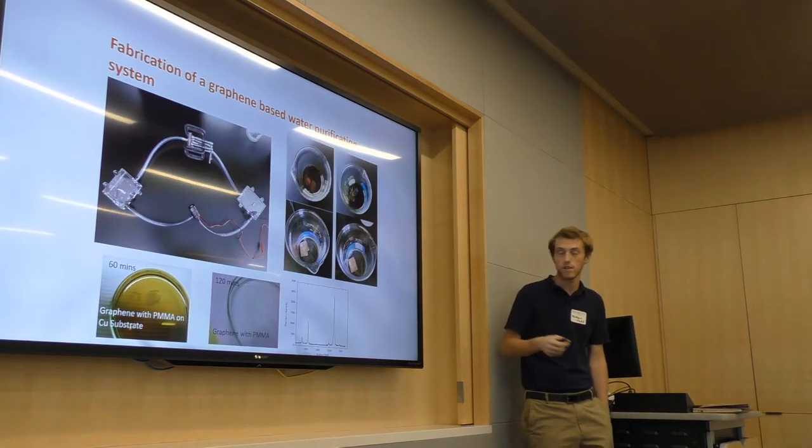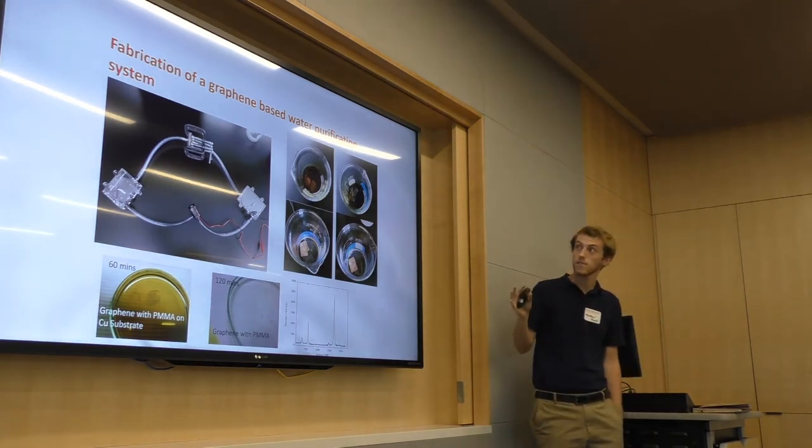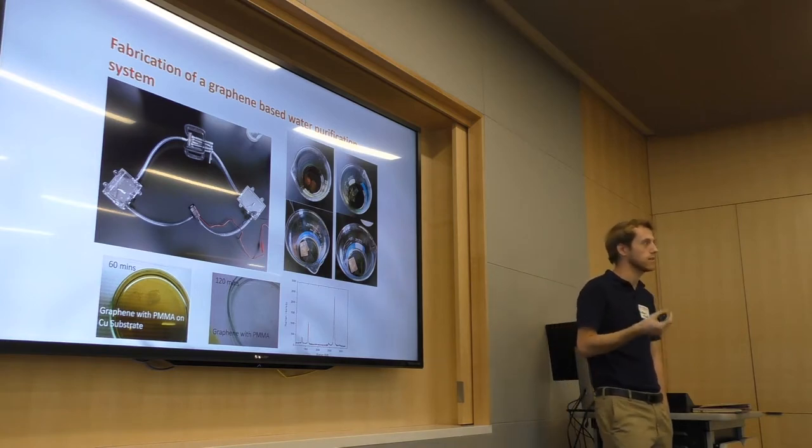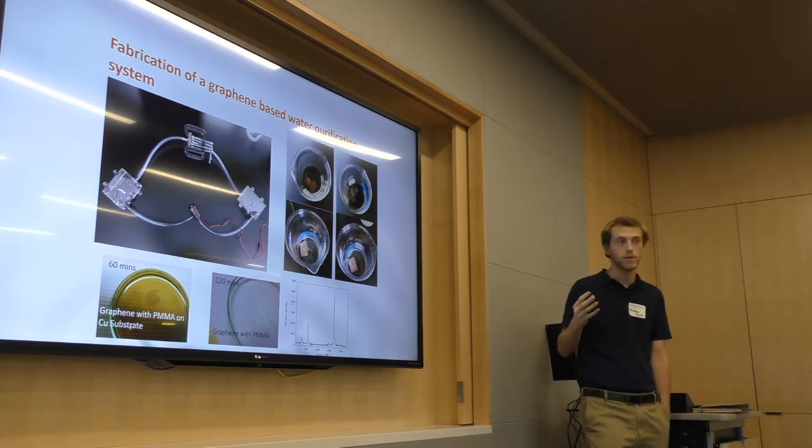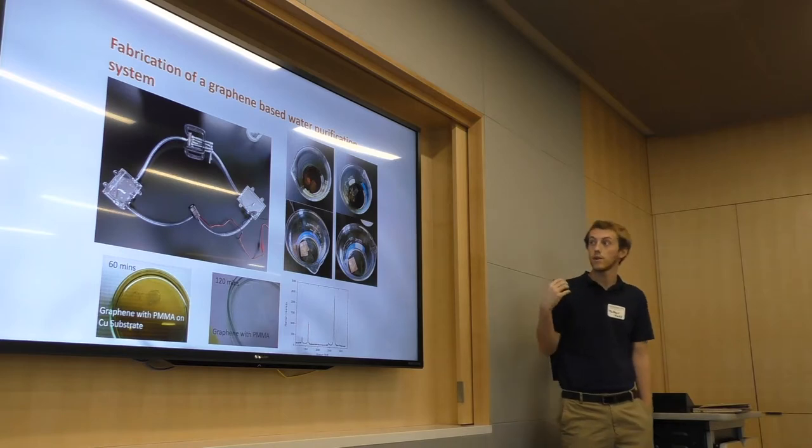The problem with this is it doesn't remove those heavy metals. So this would be actually an add-on system where we would actually use graphene. The graphene is just one atom layer thick. It's a hexagonal shape. It makes a great sort of strainer. We can force the water through it, kind of trap those heavy metals, and we can remove them from there.